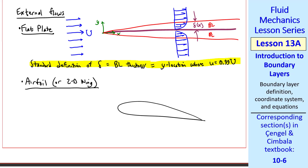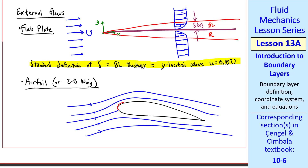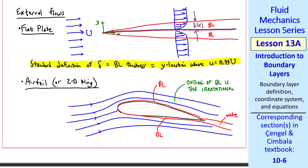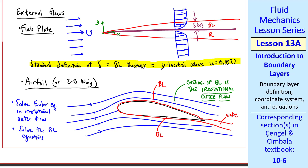My second example will be an airfoil or 2D wing at some small angle of attack. A very thin boundary layer forms along the walls, both on the top and the bottom. At the trailing edge, they merge into the wake region. Outside of the boundary layer is the irrotational outer flow. In a later lesson, I'll discuss the formal procedure for analyzing a boundary layer flow. We solve the Euler equation in this irrotational outer part of the flow, ignoring the boundary layer, then solve the boundary layer equations inside. This is less mathematically intense than solving the entire flow using the Navier-Stokes equation.